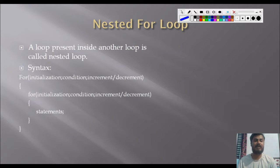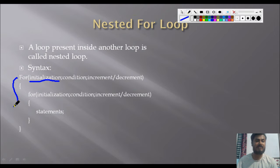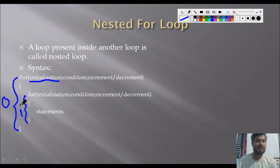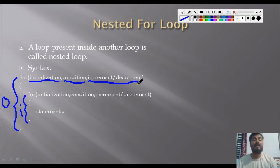Let's see the syntax. Here we can see the outer loop and the inner loop — that means a loop inside another loop. In the outer loop there are three items present: initialization, condition, and increment or decrement. In the previous lecture we saw how the for loop is used and what items are present in it.